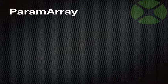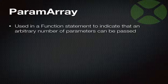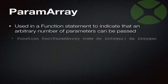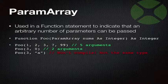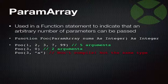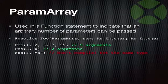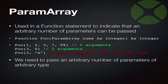To implement this, I learned about param array, which I had never used in Zojo before. It's used in a function statement to indicate that an arbitrary number of parameters can be passed. I defined a function foo with param array nums as integers — that's an array of integers of arbitrary length. But this is a problem: if I'm going to describe a function's arguments, it has to be an array of arbitrary types because functions have parameters of arbitrary type. So I need an arbitrary number of parameters of arbitrary types.